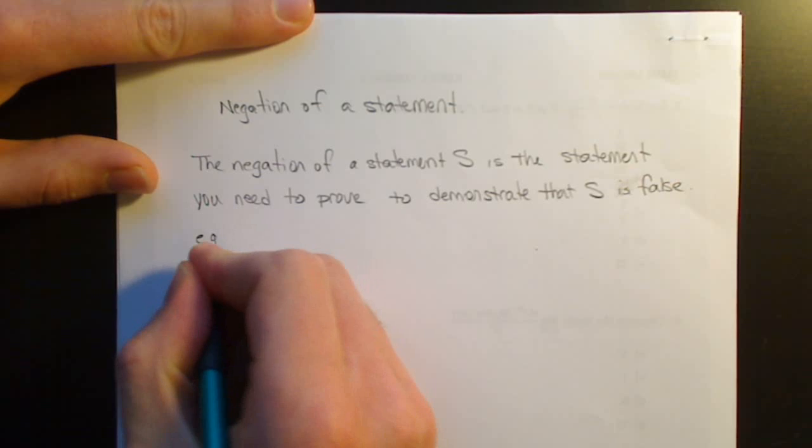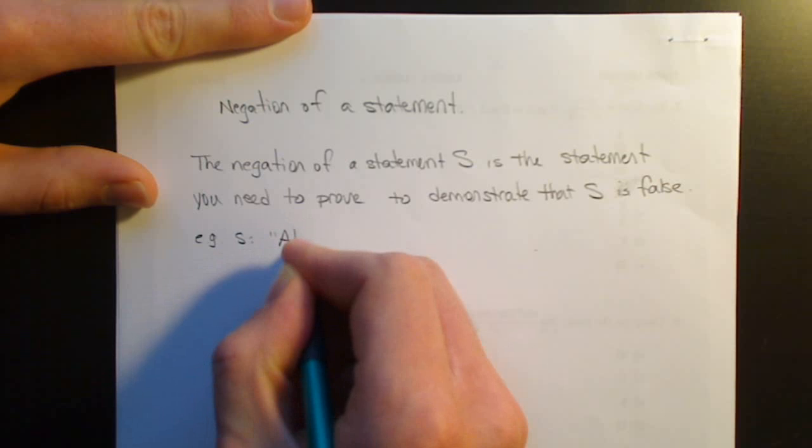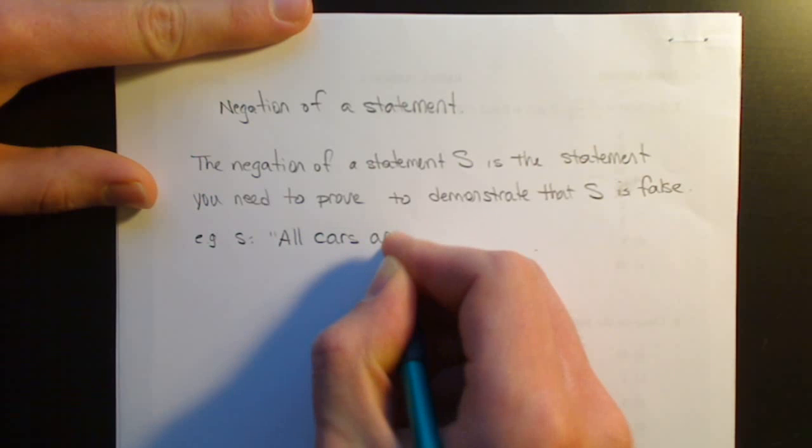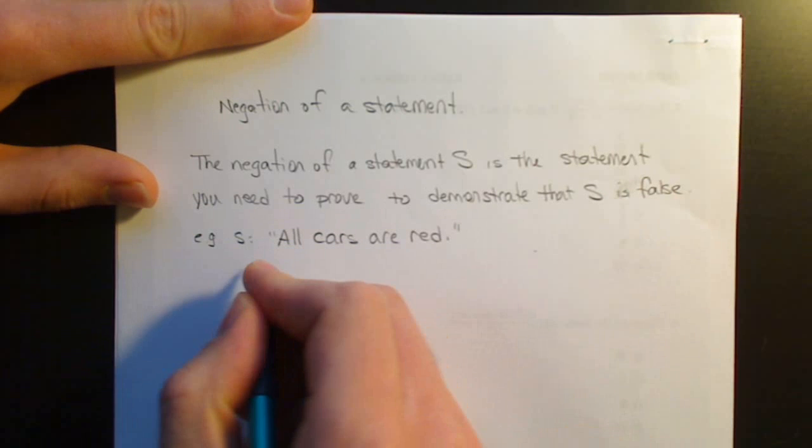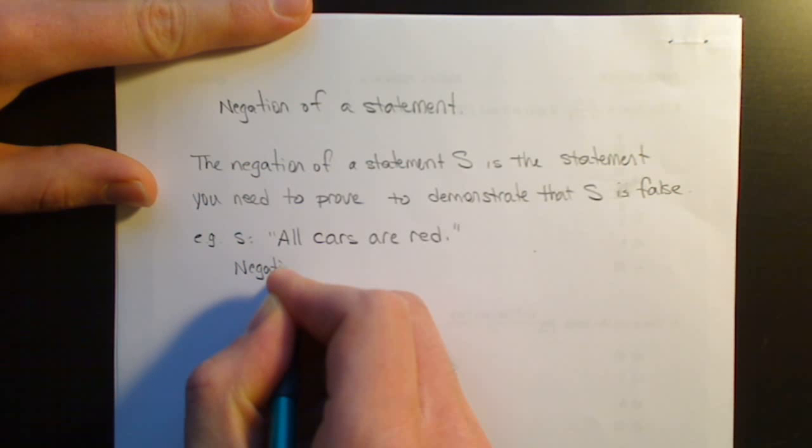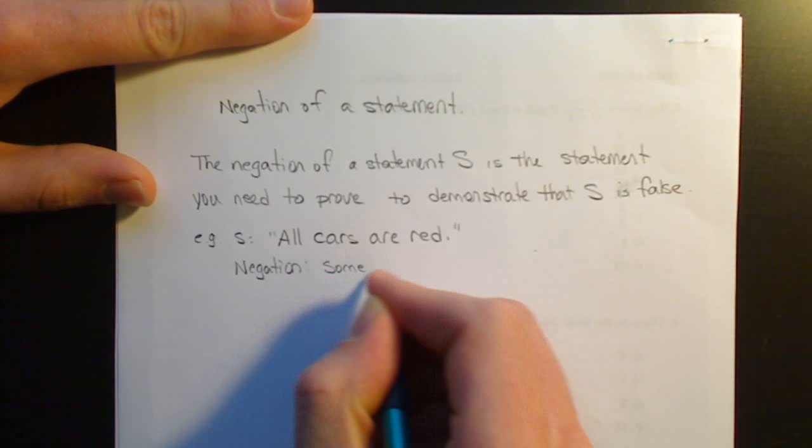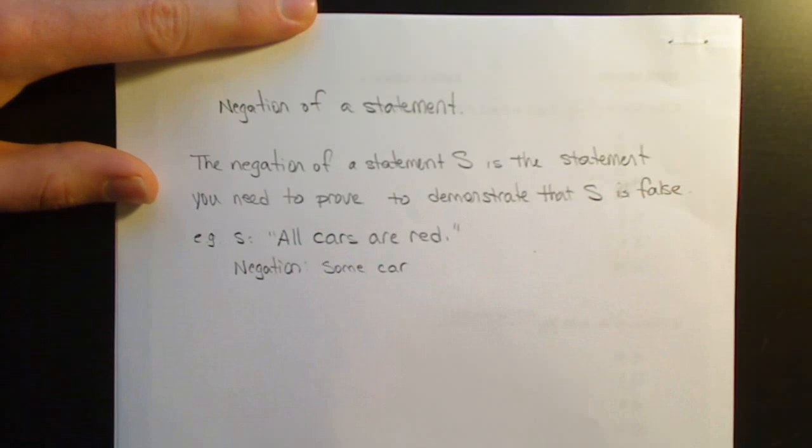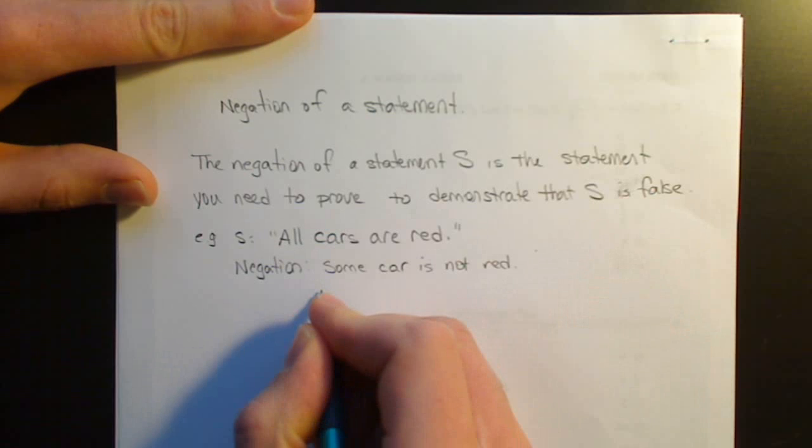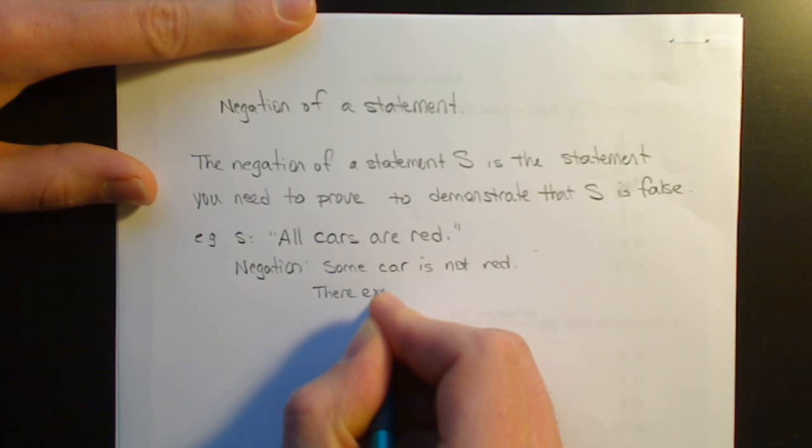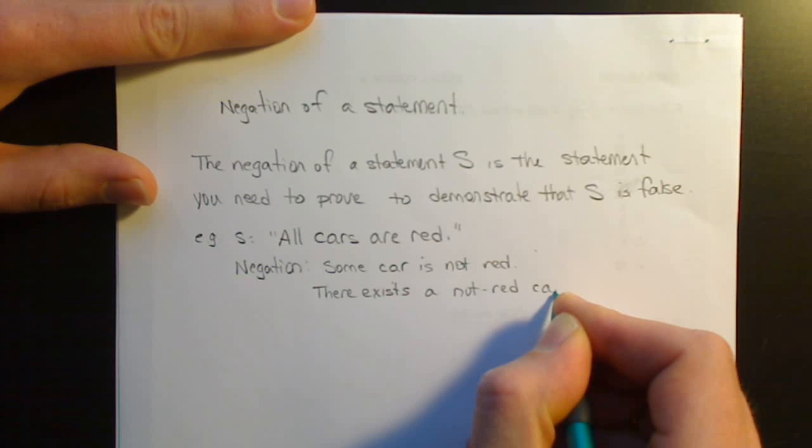So, for example, if someone makes the claim all cars are red. Well, that's clearly not correct. Because to get the negation statement you need to prove to disprove their claim, it's simply some car, not even all cars, just one car, not red. Or in fancier terms, there exists a not red car.